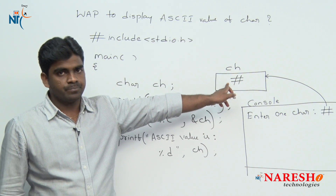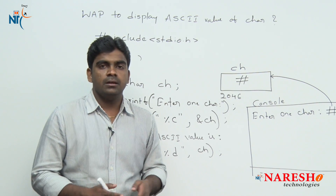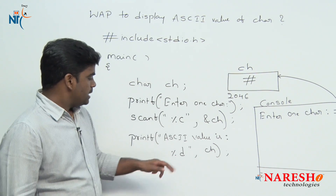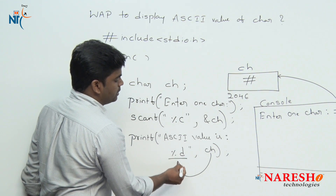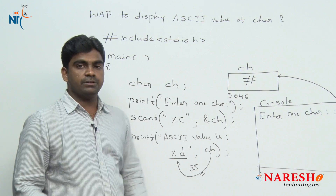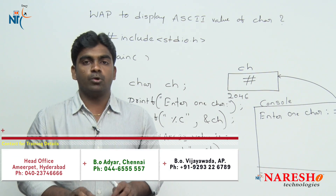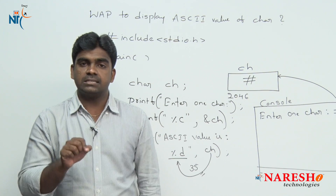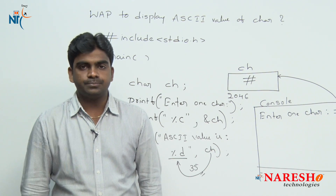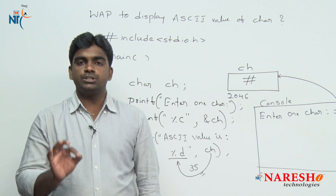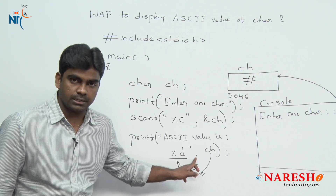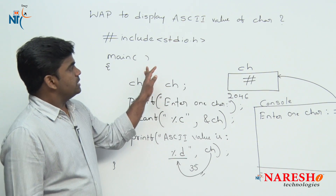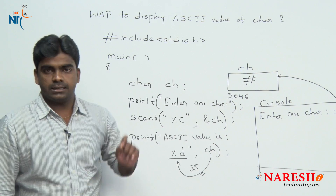Now ch contains '#'. To print the ASCII value, instead of writing %c we write %d in printf. Here with %d, ch will print the corresponding ASCII value. The ASCII value of '#' is 35, so it will print 35. When you execute the program, the console clearly asks 'please enter one character', you enter any character such as plus, minus, dollar, or hash, press enter, and it shows the ASCII value of that character.